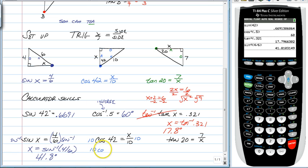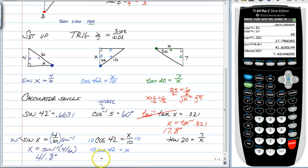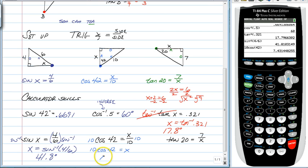For this next one to solve for x, we just need to multiply both sides by 10 to get x by itself. That's going to leave us with 10 cosine 42 is equal to x. So then you're just going to type that in the calculator. 10 cosine of 42. And that'll give you x is equal to 7.43.